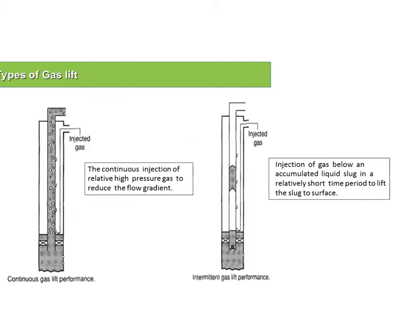What are the types of gas lift? There are two types: continuous gas lift and intermittent gas lift. In continuous gas lift, we inject gas from the annulus continuously through the operating valve. Gas mixes with the production fluid at the valve, and they flow up together on a continuous basis — all the time gas is injected here and oil is produced.